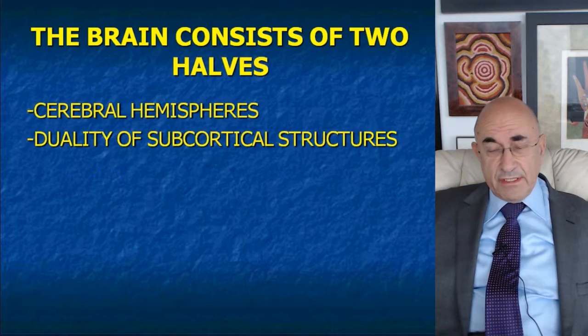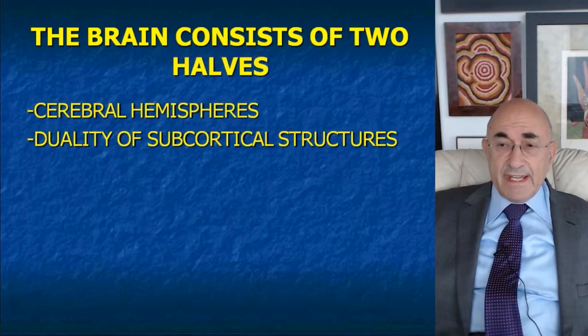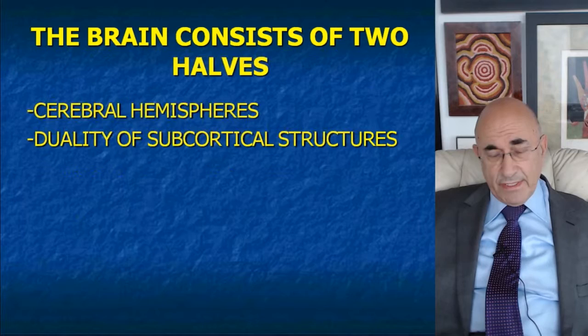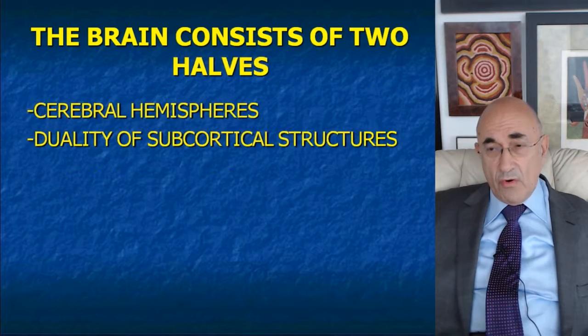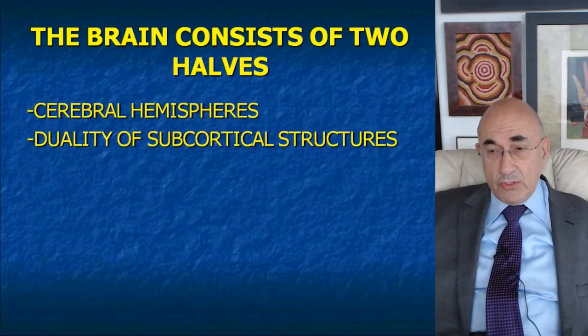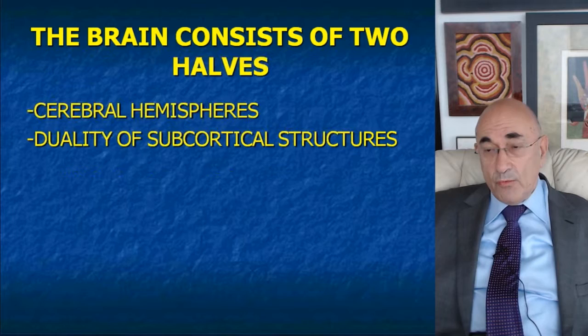Of course, you all know that the brain consists of two halves, but what people sometimes forget is that this bilateral arrangement is not limited to the cortex. We talk about cerebral hemispheres, which implies this bilateral arrangement of the cortex. But in reality, every subcortical structure is also arranged in pairs. This bilaterality — this two-halfedness — is a pervasive property of the brain affecting all structures, with two exceptions: the pituitary gland and the pineal gland. These are the two structures which do not come in pairs.